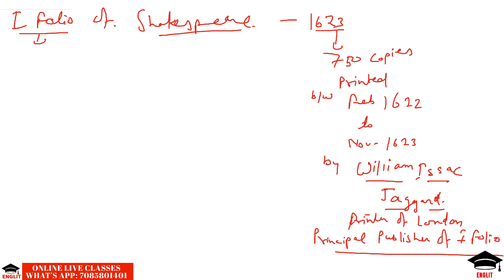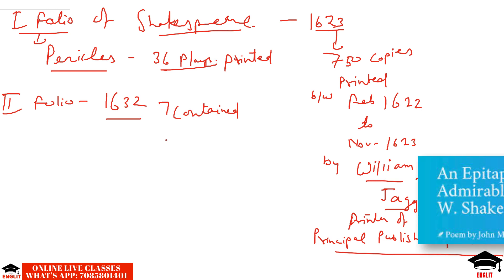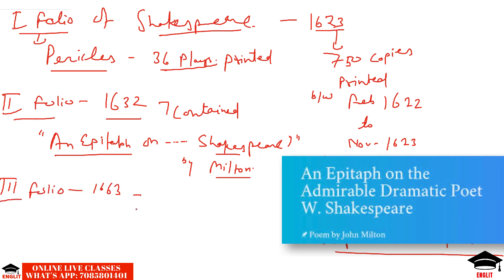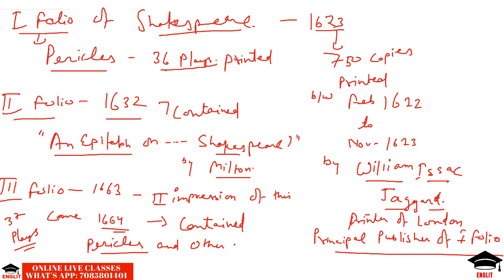The one play left out of the First Folio was Pericles — except for Pericles, all 36 plays were published. The Second Folio came in 1632 and contained an epitaph on Shakespeare by Milton. The Third Folio came in 1663, with a second impression in 1664. This Third Folio contained Pericles along with six other apocryphal plays — plays whose authorship is doubtful — making 37 plays total. The Fourth Folio came in 1685.